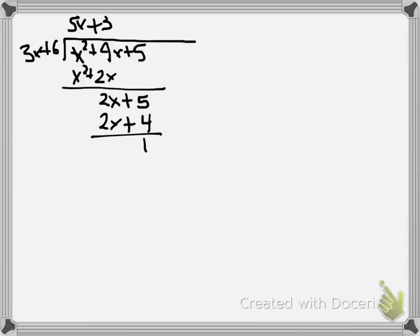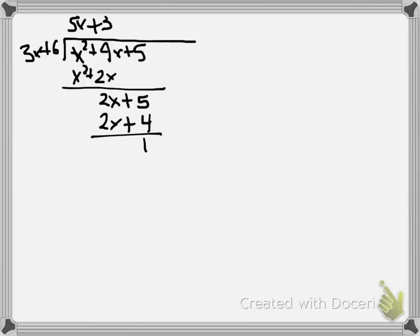So now we need divide 1 into 3x + 6. Obviously goes in there 3x + 6 times, gives us a remainder of 0. So our GCD is 1 since that was the last non-zero remainder that we encountered in running through the Euclidean algorithm.